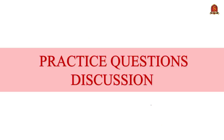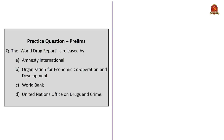With this we have come to the last part of today's discussion — that is prelims practice questions discussion. The first question: The World Drug Report is released by whom? The correct answer is option D: United Nations Office on Drug and Crime.